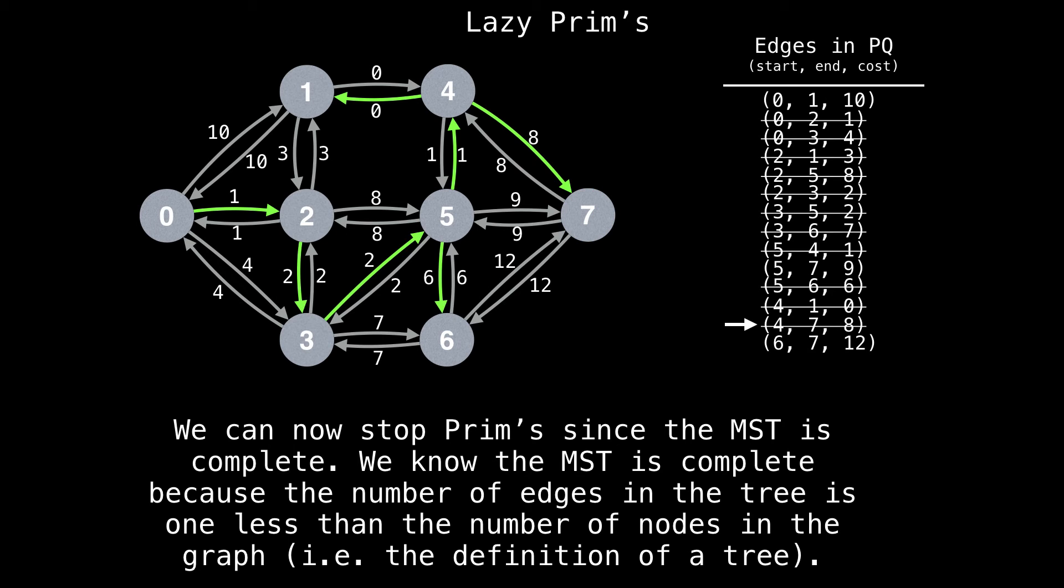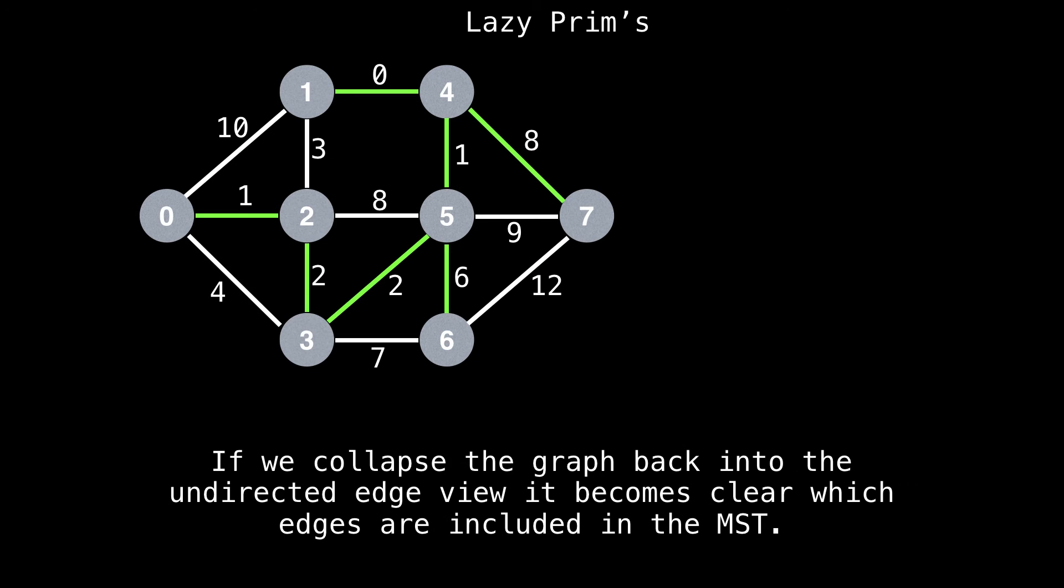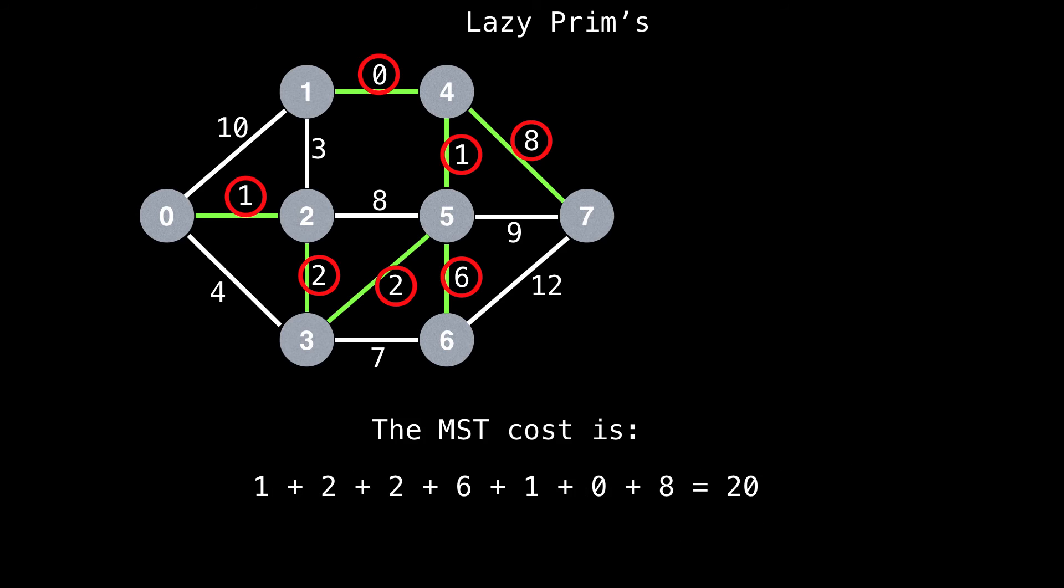We can now stop Prim's because the minimum spanning tree is complete. We know the minimum spanning tree is complete because the number of edges in the tree is one less than the number of nodes in the graph. This is precisely the definition of a tree. If we collapse the graph back into the undirected edge view, it becomes clear which edges are included in the minimum spanning tree. To find the cost of the minimum spanning tree, simply sum up the cost of all the edges which were selected to be part of the minimum spanning tree, and this totals to 20.